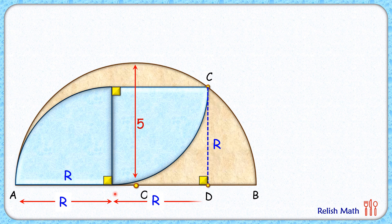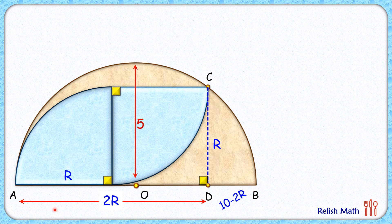The length CD will be the same as r centimeters. The length AD will also be r centimeters on both parts, so the full length AD will be 2r centimeters. AB is the diameter and its length is 10 centimeters, so DB will be 10 minus 2r. Now let's complete the semicircle into a full circle and extend CD to meet the circle at point E. Then DE will also be r, making AB and CE two chords intersecting at point D.